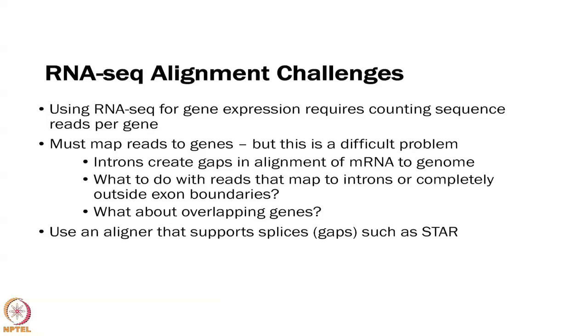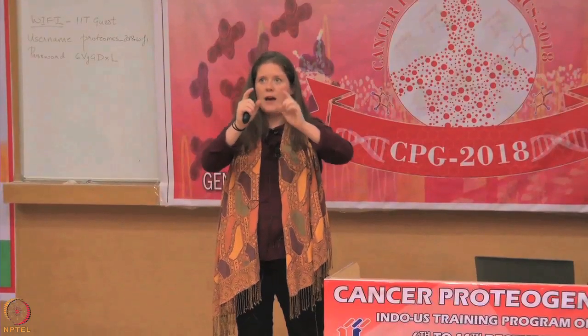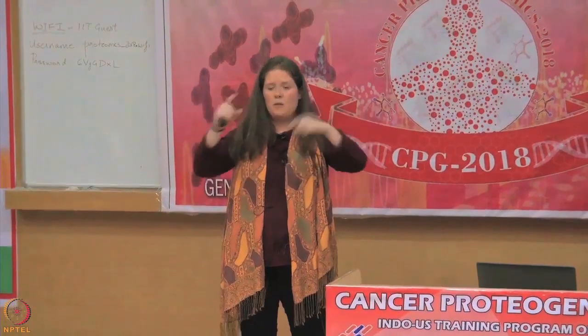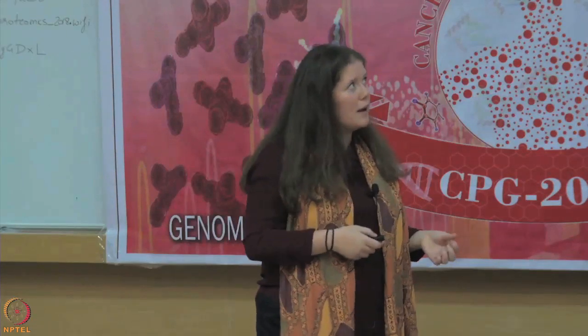There are some challenges to RNA-seq alignment. With whole genome sequencing, you have chunks of DNA that you map back to your reference genome. But with RNA you have exons that have been spliced together, so there will be gaps that you have to account for. The aligners used for RNA-seq have to be more sophisticated because they must deal with these gaps, figure out where the boundaries are, and record the junctions.